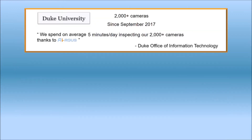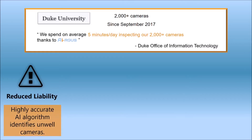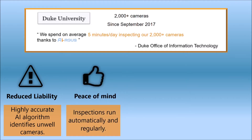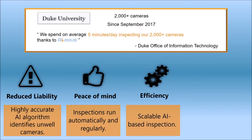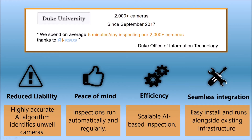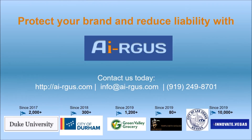Duke University has used Argus since 2017, and according to Duke's CIO, it takes only 5 minutes a day to inspect their 2,000-plus cameras. Argus offers reduced liability through consistent inspections by the highly accurate AI algorithm, peace of mind that inspection is running automatically every day, a scalable solution for camera systems of any size, and an easy-to-set-up software solution that runs alongside your existing environment. Have the video you need when you need it — otherwise, why even bother having cameras? Protect your brand and reduce liability with Argus.